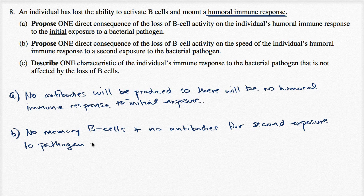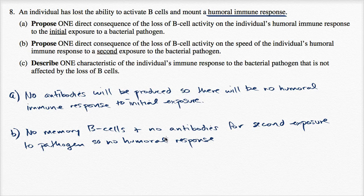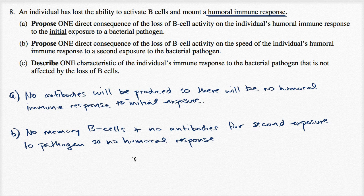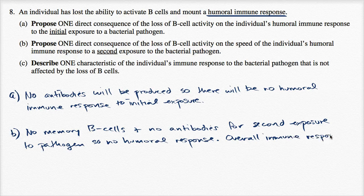There will be no humoral response, and the overall immune response will be slower. The whole point of B cells and antibodies is that the second time the pathogen appears, it gets tagged and recognized very quickly. Without B cells, you won't have that quick recognition of the antigen on secondary exposure. Overall, the immune response will be slower and less effective.